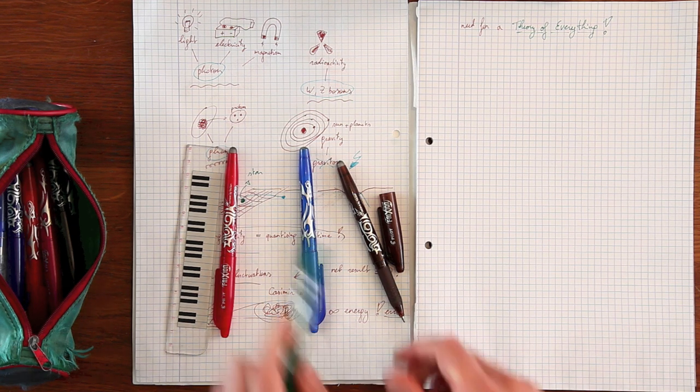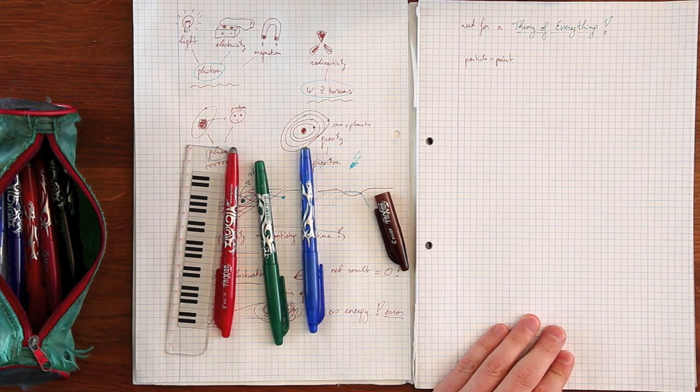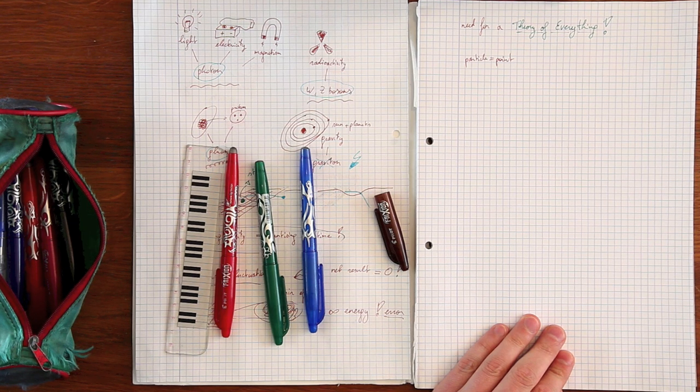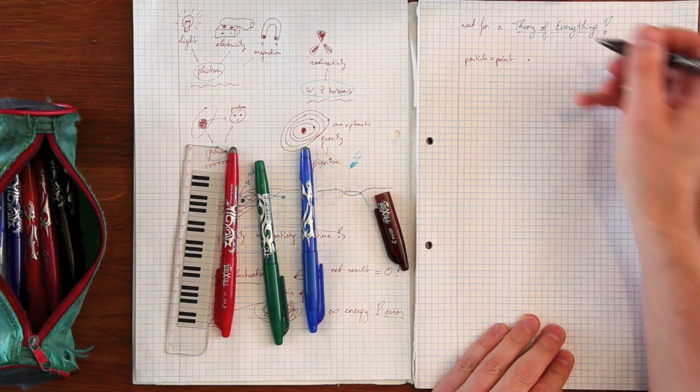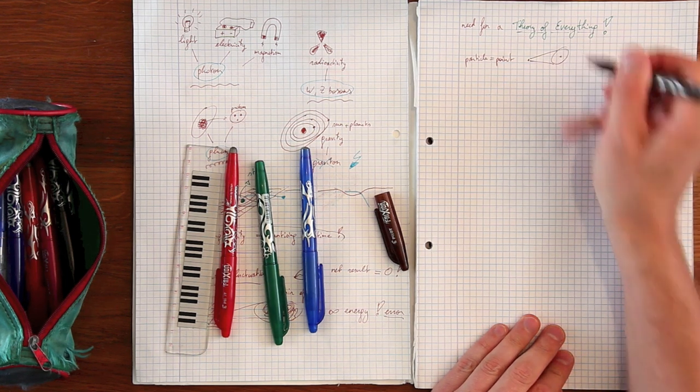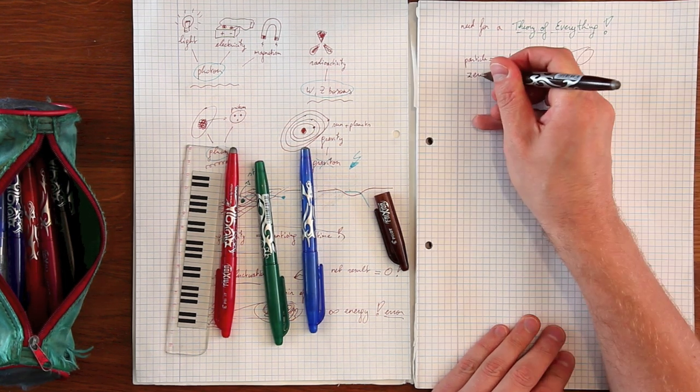Note that, until now, every particle we refer to is treated as being zero-dimensional, a perfect point without a length. If you would zoom in, it remains a point, and it remains a point.